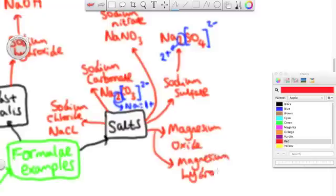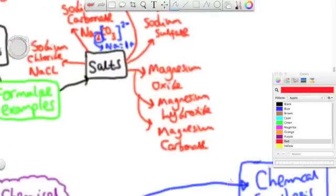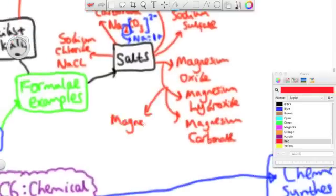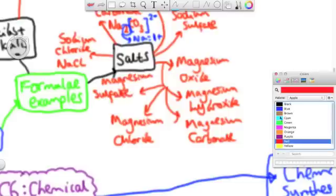We've got sodium nitrate which is NaNO3, nitrate is a 1 minus ion and therefore you need a 1 plus ion of sodium to balance it out. We've also got some salts of magnesium: magnesium oxide, magnesium hydroxide, magnesium carbonate, magnesium chloride and magnesium sulfate.